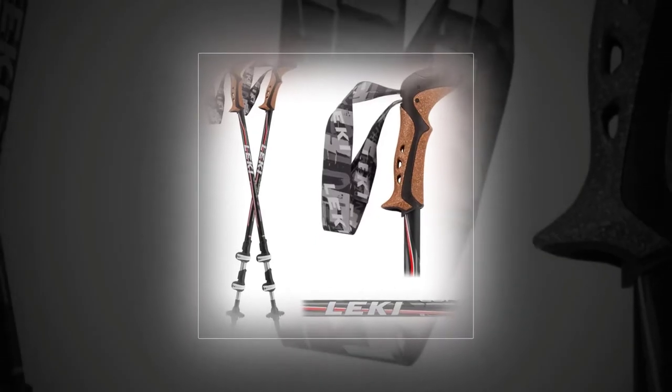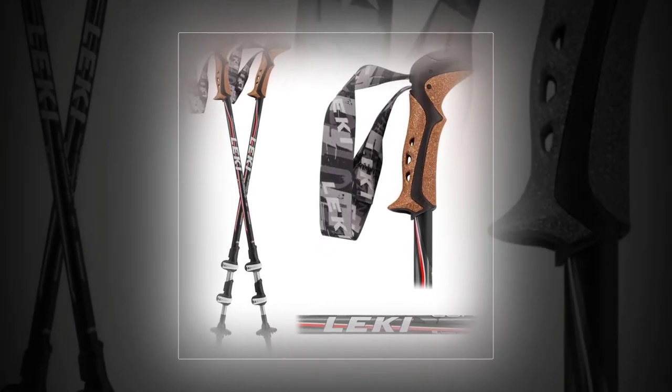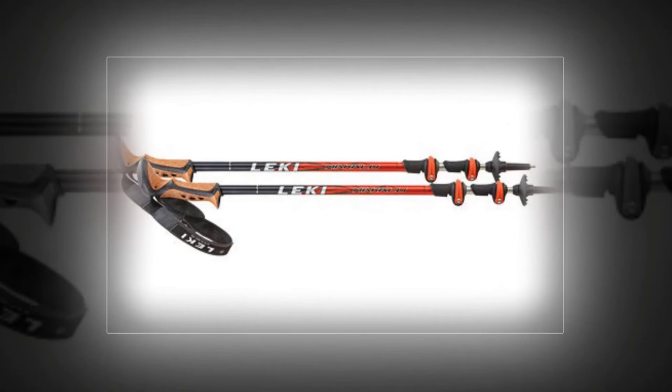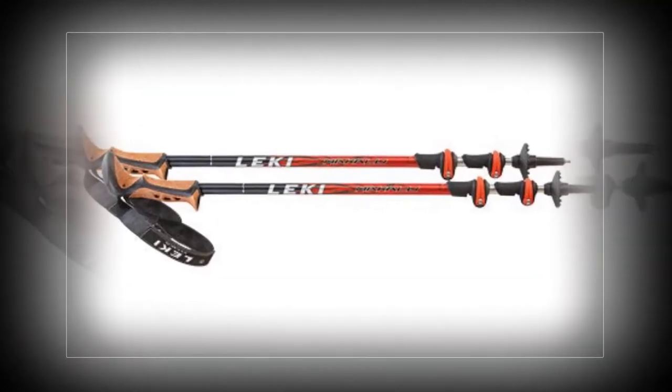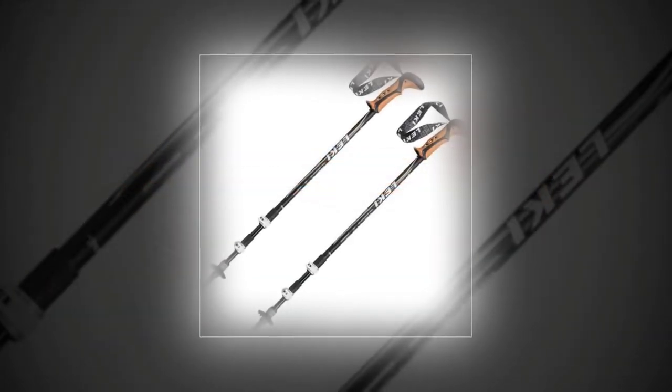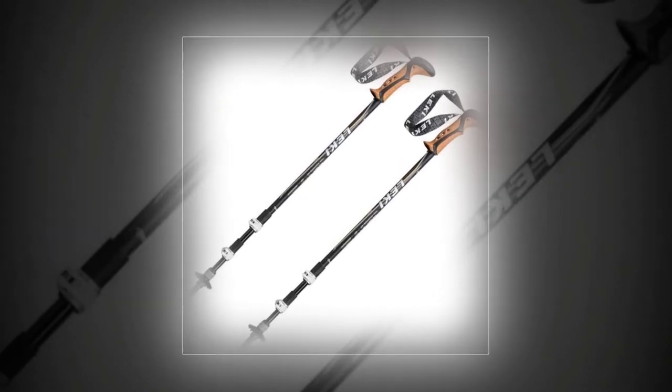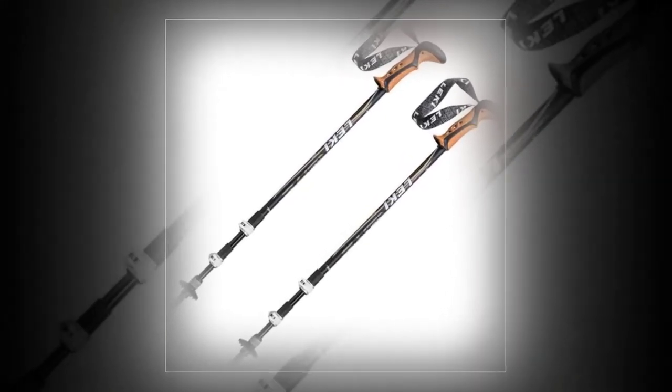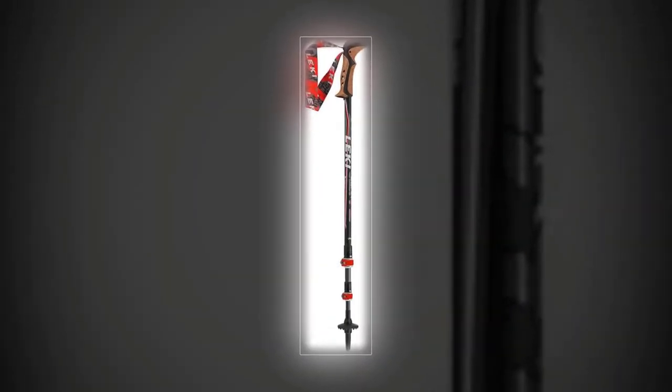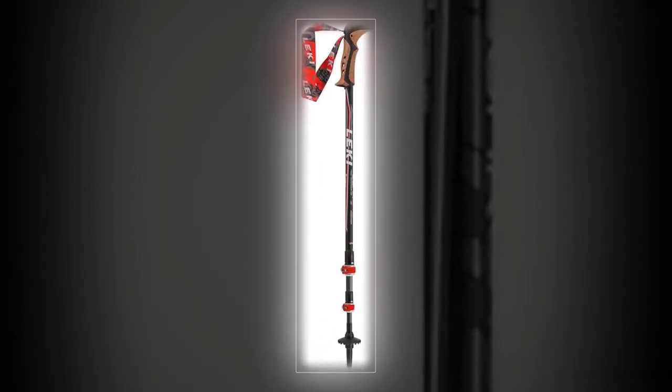Leki Makalu Light: Built for use in any weather, the Leki Makalu Light feature an advanced locking system that's easy to use even if it's cold out and you're wearing thick gloves. They measure 68 centimeters collapsed and 135 centimeters when fully extended. Water-resistant grips, rigid aluminum shafts, weigh just under nine ounces each.